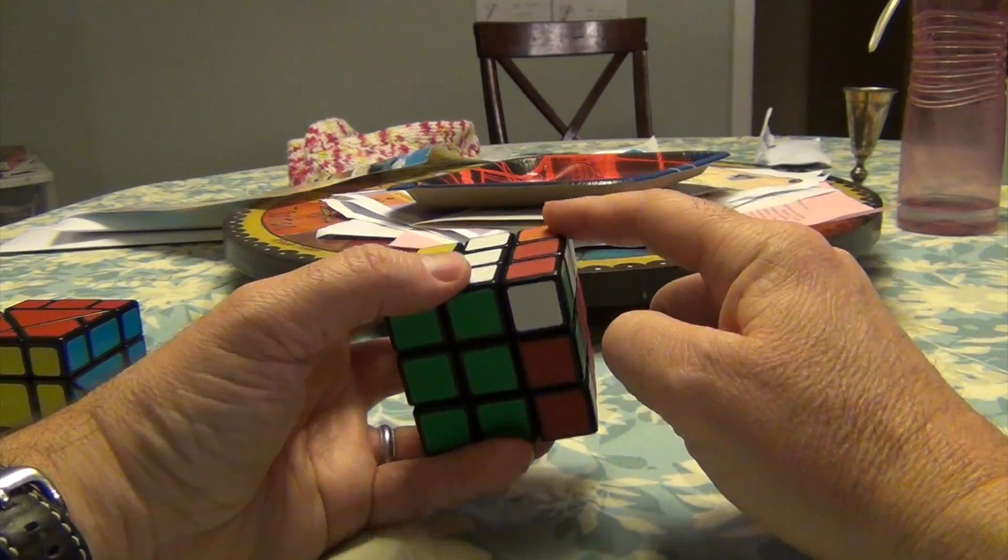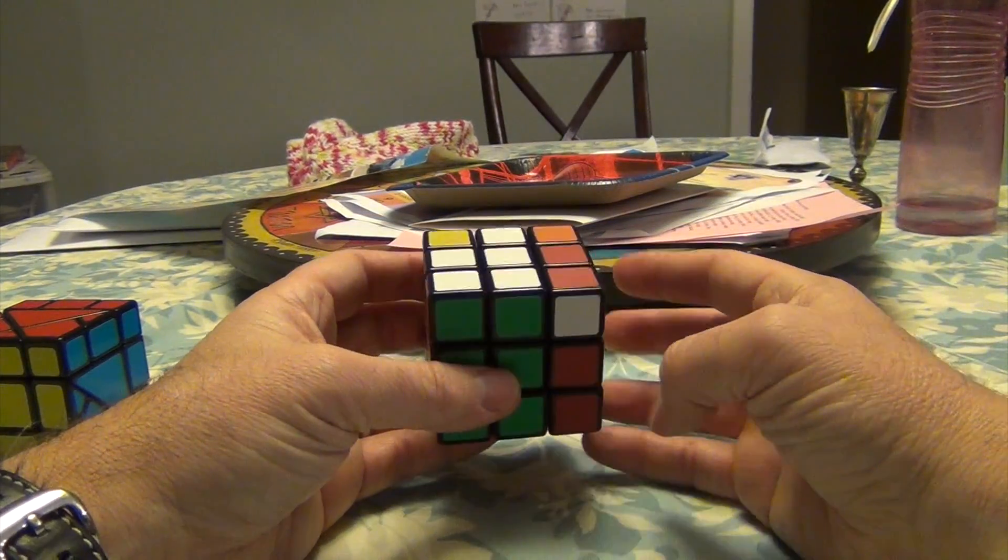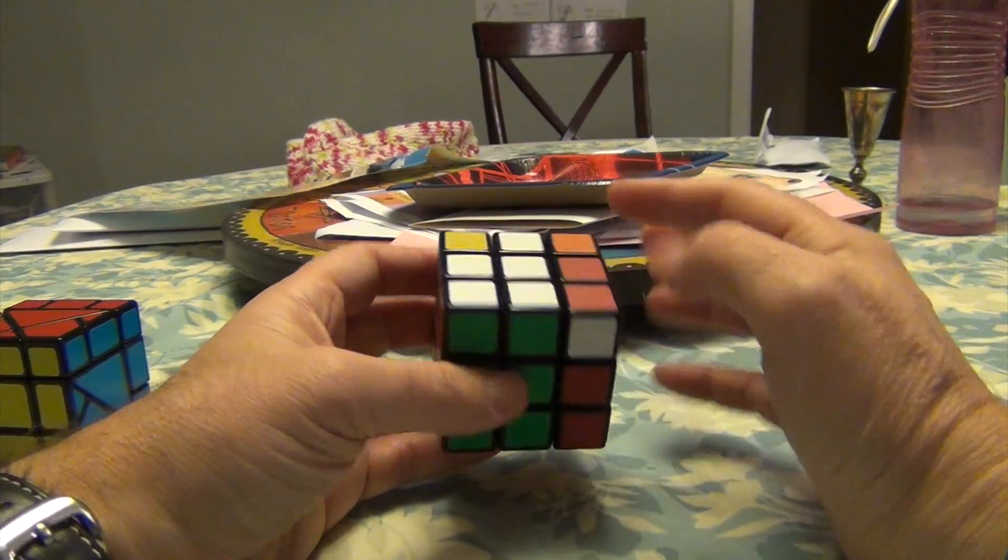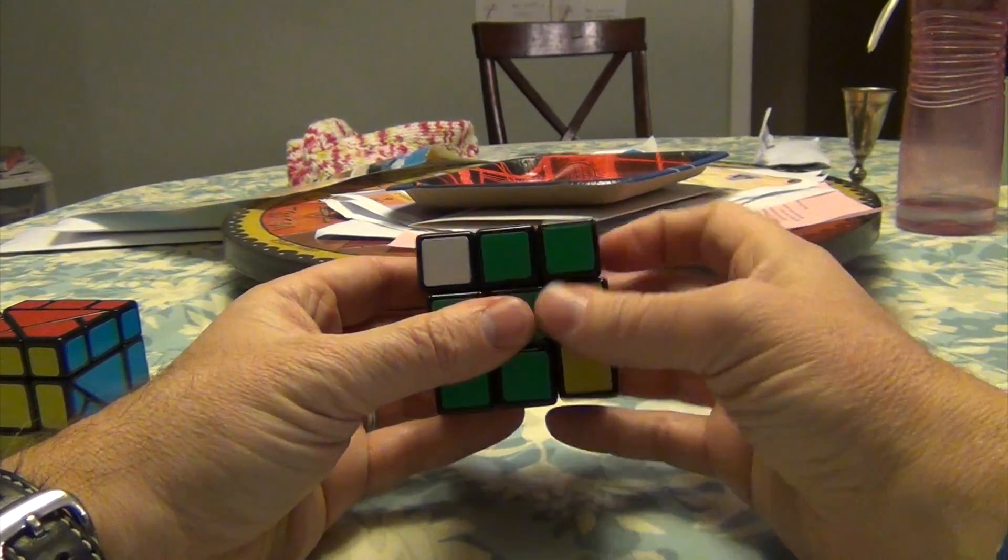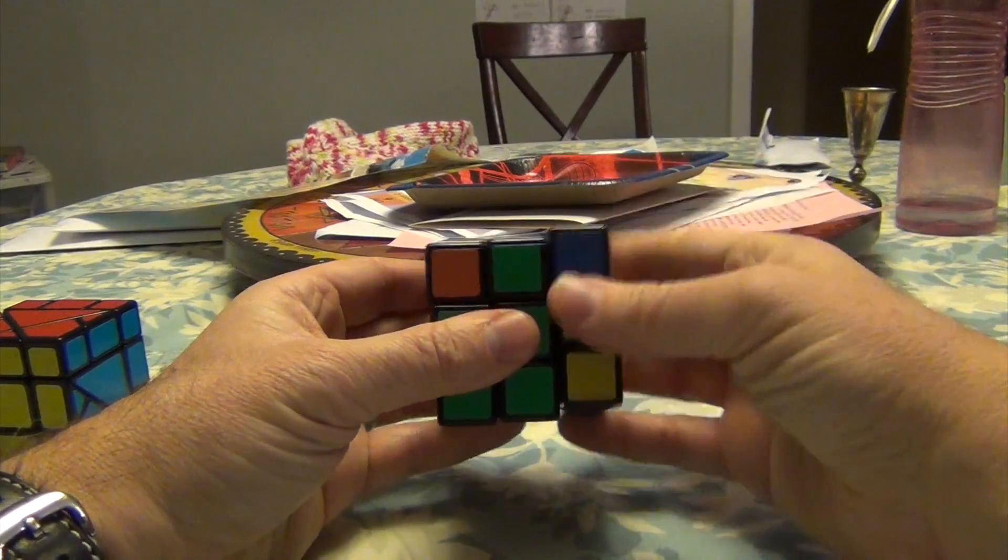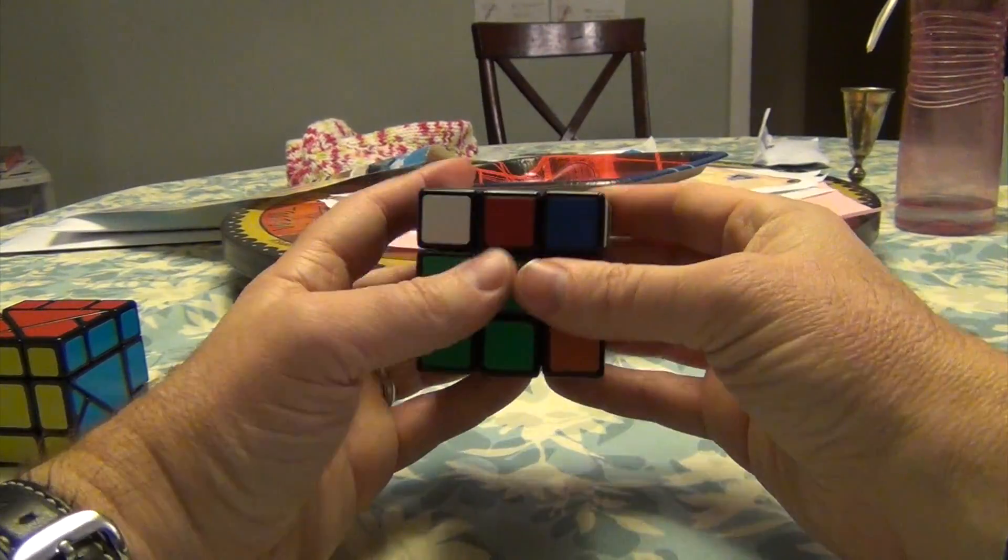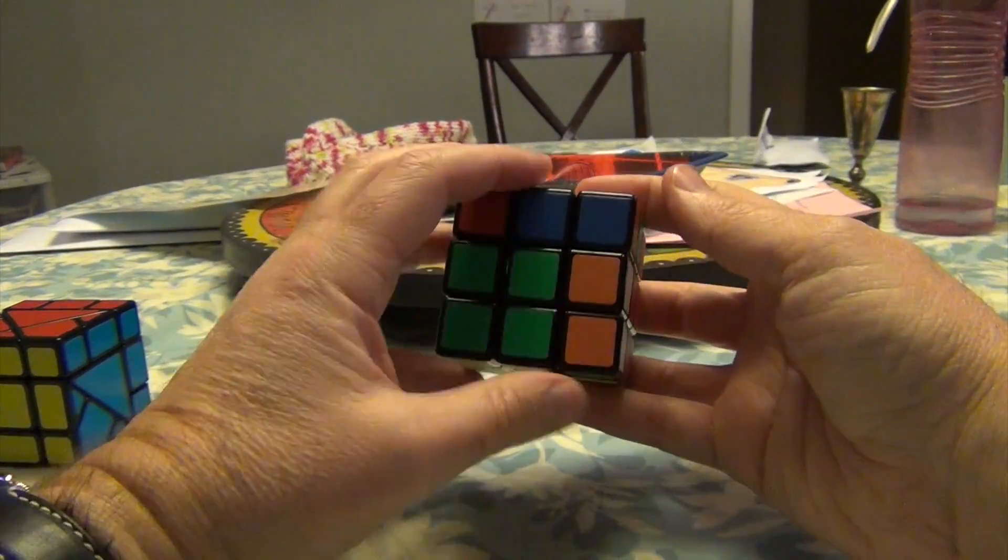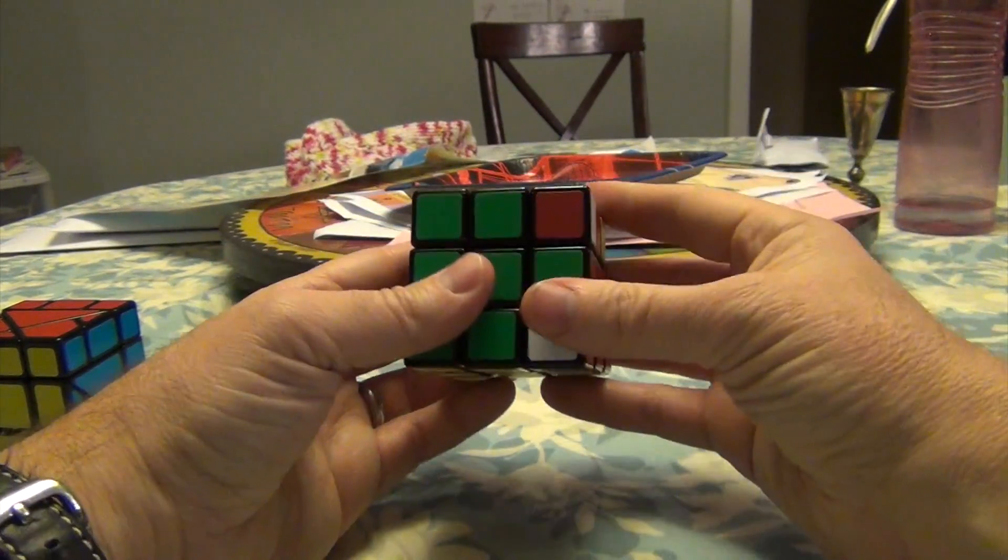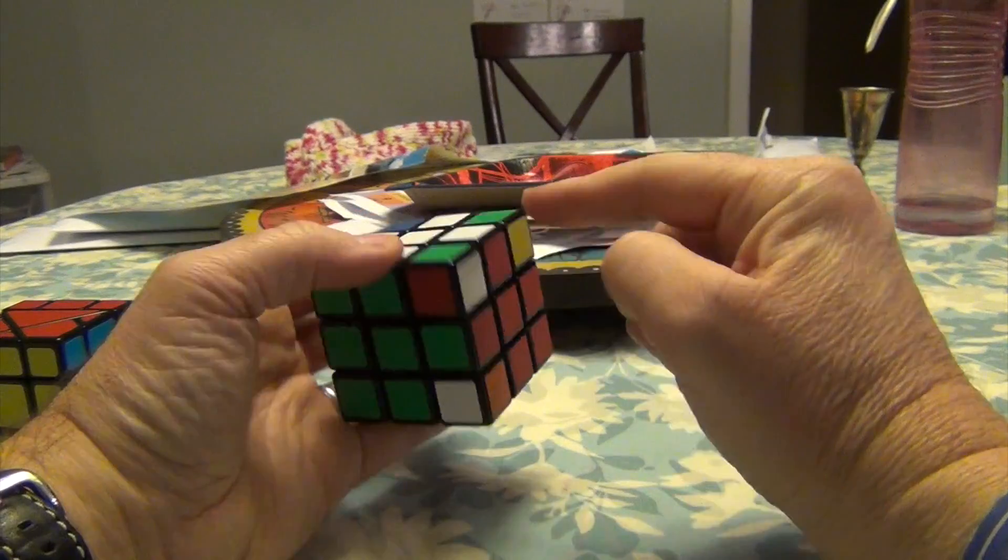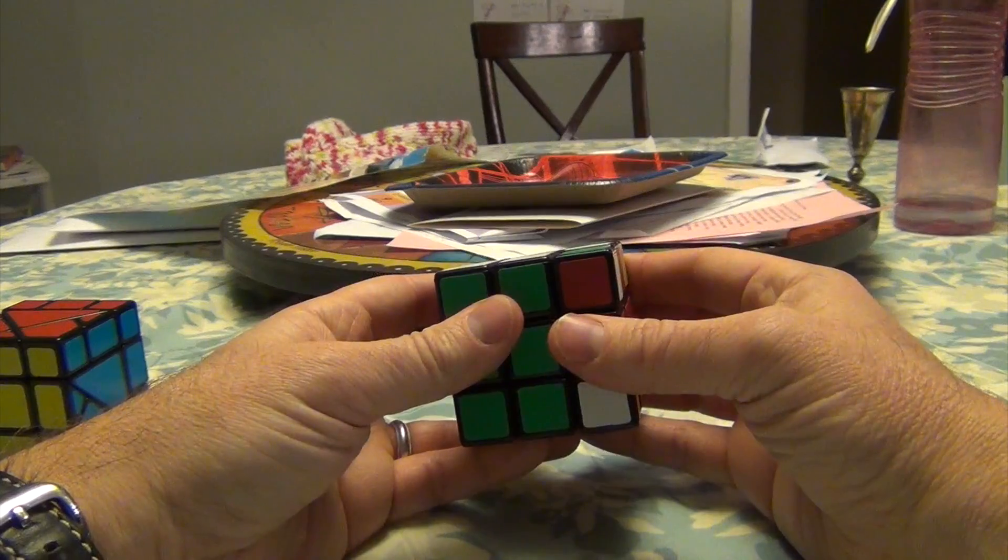So this was a way to three-cycle these three corners without changing the position of any of the edges or any of the other corners. Again, this went to here, this went to here, and this went to here. Now I'll point out that if I do this algorithm again, it'll three-cycle these corners, but it'll also flip these edges back. R U R' U R2 U R', U, F R' F' R, 2U, F' U' F, 2U. And as promised, these have been rotated back, and these are still cycling around.